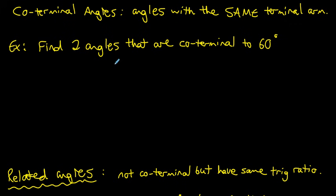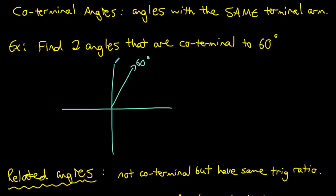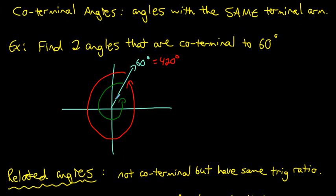Co-terminal angles are angles that have the exact same terminal arm. For example, 60° lands in a certain spot. If we rotate another 360° we get 420°, which lands in the exact same spot. Rotating another 360° gives 780°. All three angles — 60°, 420°, and 780° — share the same terminal arm and are called co-terminal angles.